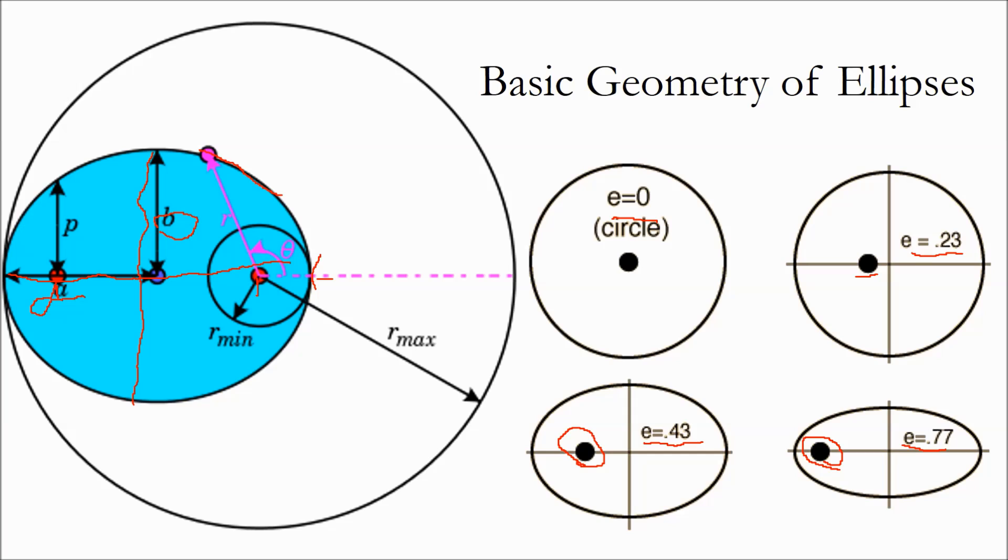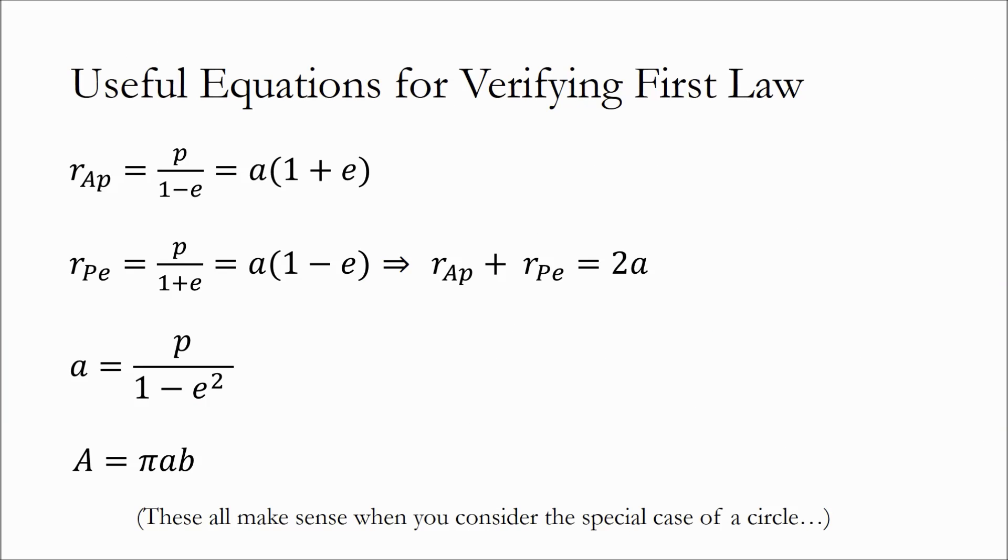Alrighty, now that we have a language for talking about ellipses, let's dig in and see if KSP holds to Kepler's laws. First, let me be clear, this isn't supposed to be some rigorous mathematical proof. All we're doing here is trusting that these equations are valid and using them to verify that KSP adheres to Kepler's laws.